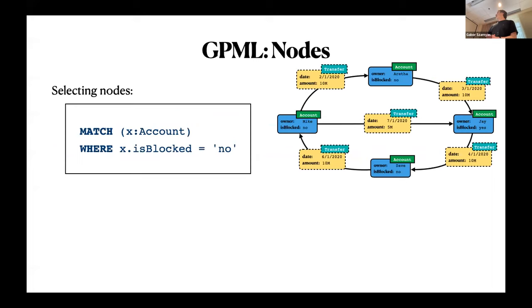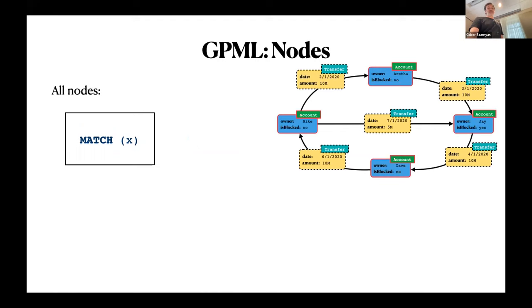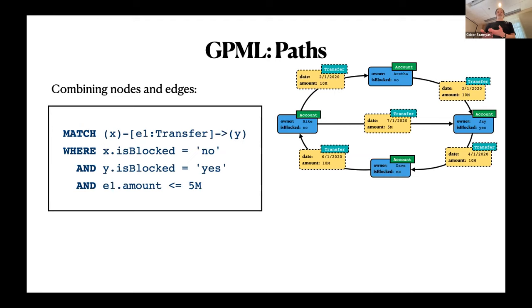The pattern matching feature: as you would expect, you should be able to select nodes and filter them based on conditions on properties using a MATCH clause and WHERE clause — similar to what you'd put in SQL. Here we're selecting all the non-blocked accounts, shown in red. You can just select all nodes with no conditions, or you can combine nodes and edges. Here we look at all transfers from an unblocked account to a blocked account with amount at most five million.